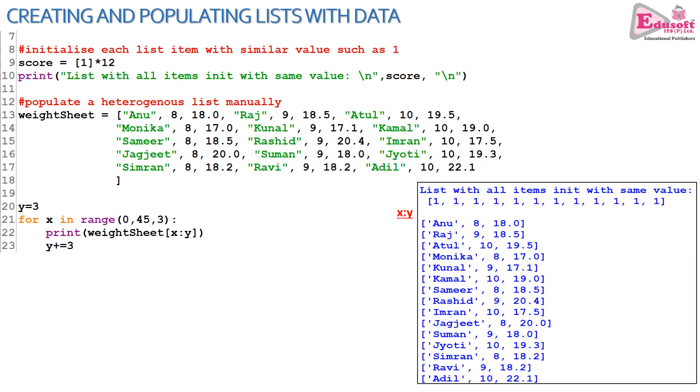Moving on to the next part of the program, line 9. Here the asterisk sign is working as a replication operator. Here I am creating a list of 12 elements and each element has the value 1.